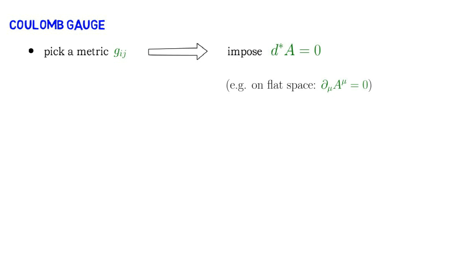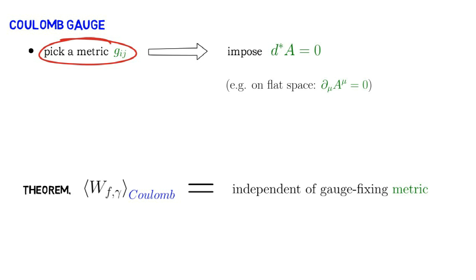Physically, this is eliminating longitudinal modes of the gauge field. My first result is that Wilson loop expectation values evaluated using Coulomb gauge are independent of the choice of gauge fixing metric. That is, the sum over Feynman diagrams that results from the Wilson loop expectation while requiring a choice of metric to be constructed does not depend on which choice we make.